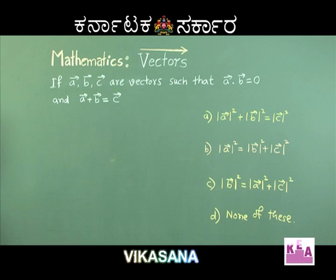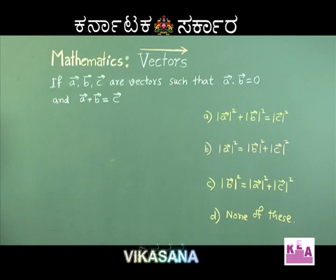Option B: magnitude of vector A squared is equal to magnitude of vector B squared plus magnitude of vector C squared. Option C: magnitude of vector B squared is equal to magnitude of vector A squared plus magnitude of vector C squared. Option D: none of these.